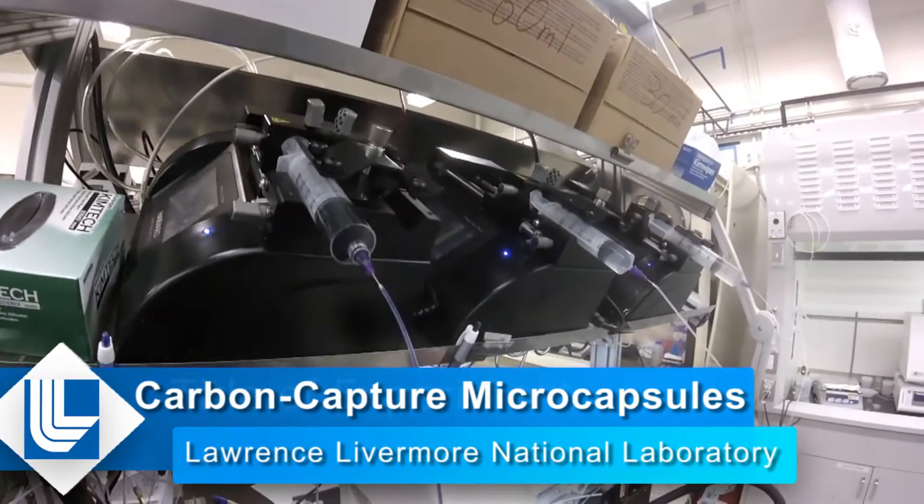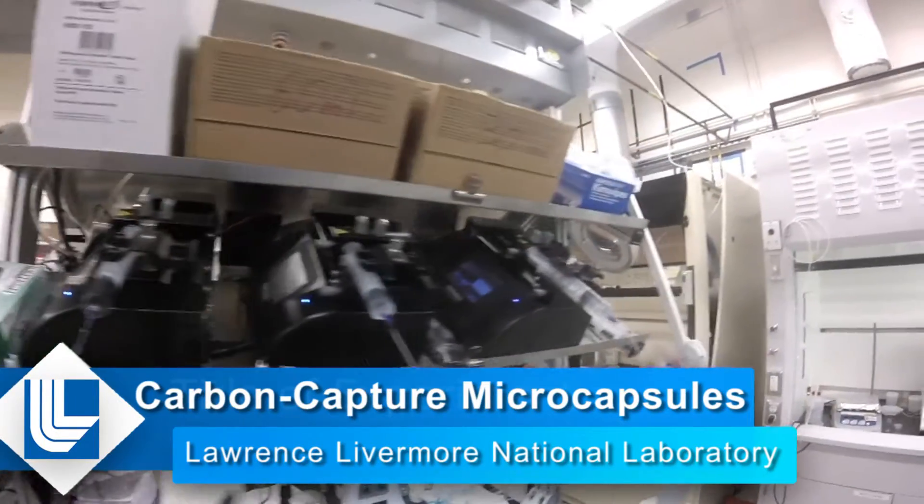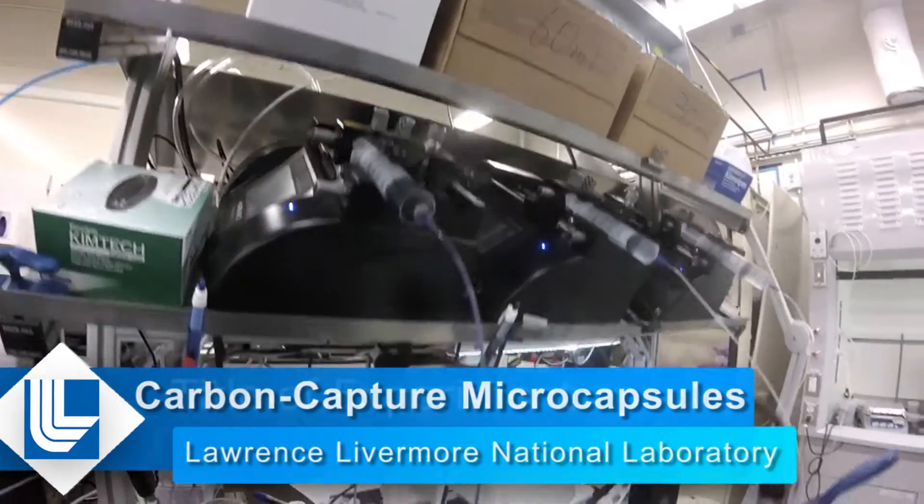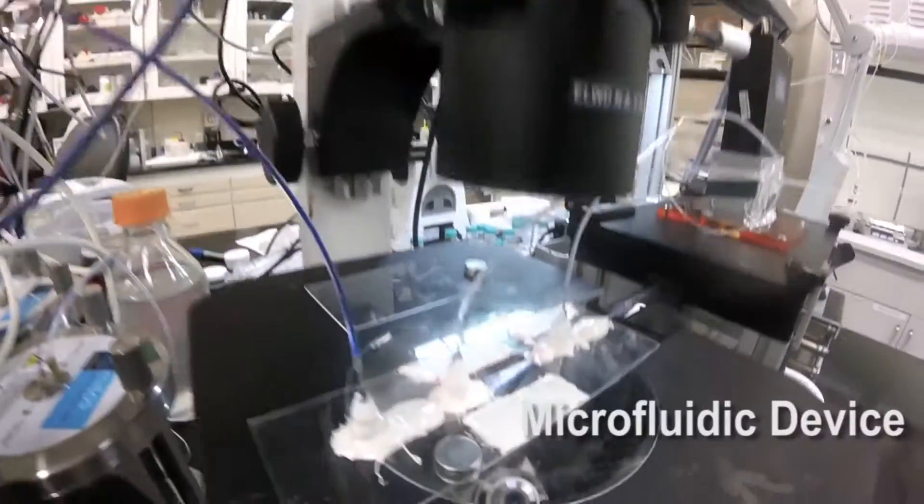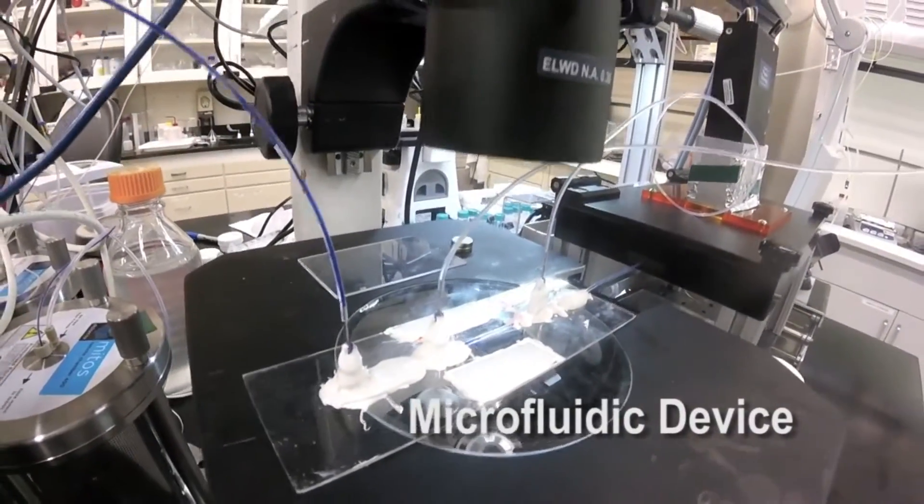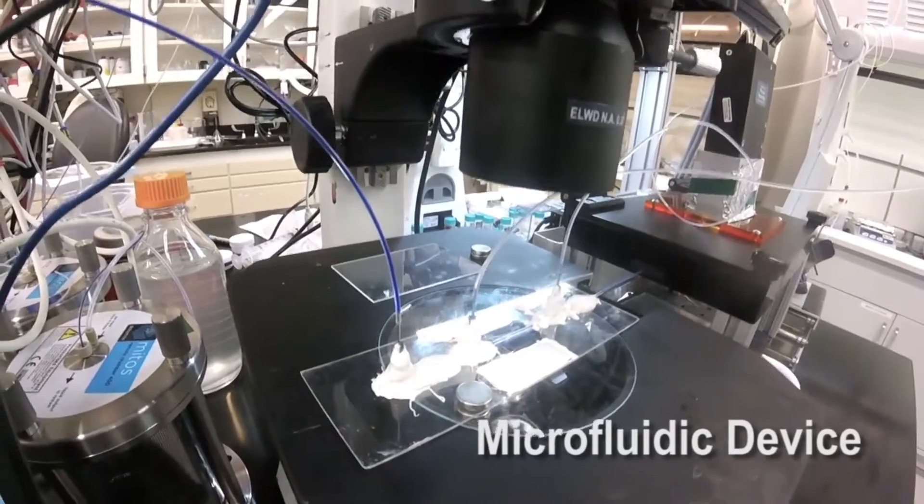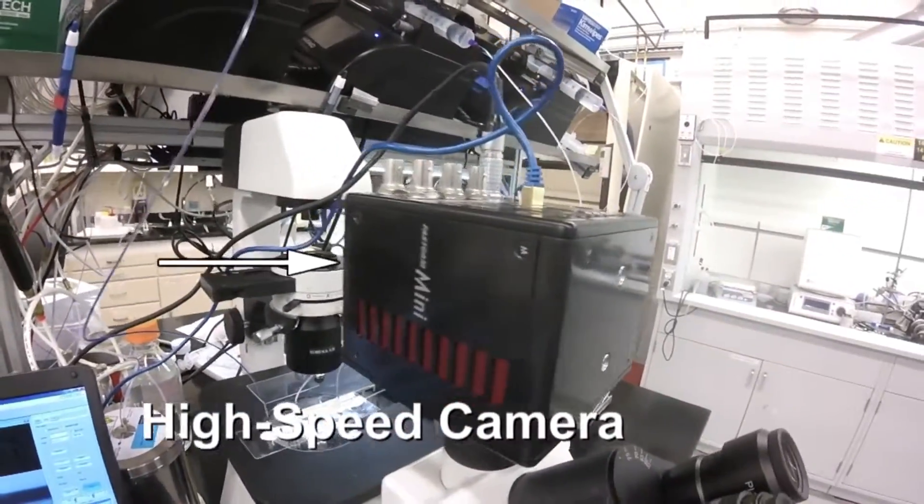After loading these syringes with liquids, they're left on the syringe pump, and then the liquids are pumped all the way to this microfluidic device. Right now we're making double emulsion drops at a really high speed, and that's why we need to use this high-speed camera to help with observation of the droplet generation.